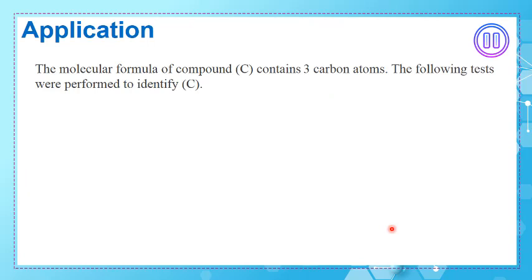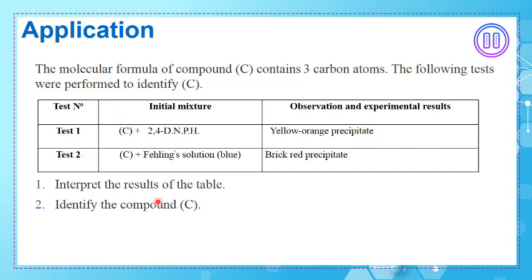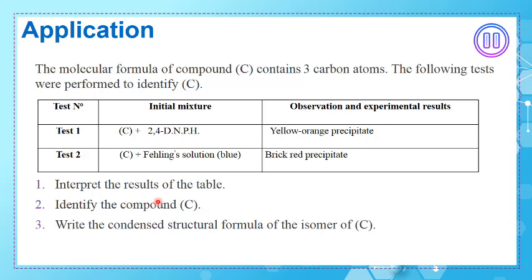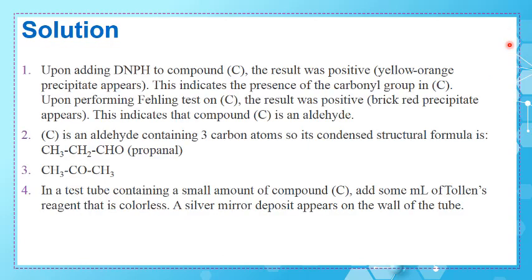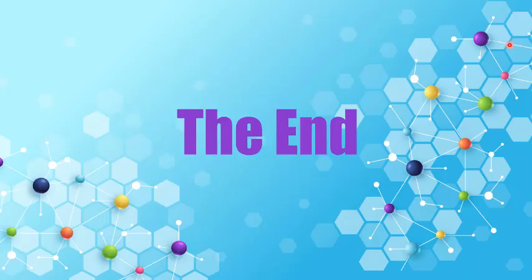Here is an application: a compound C has a molecular formula containing three carbon atoms. The following tests were performed to identify C, with results given in the table. You must interpret the results, identify compound C, write the condensed structural formula of an isomer of C, and describe another test to identify that isomer. Please pause and solve it, then check the solution provided. Thanks for watching — see you in another video!